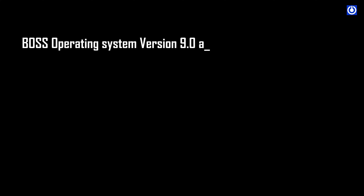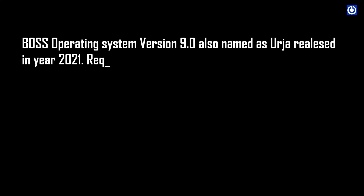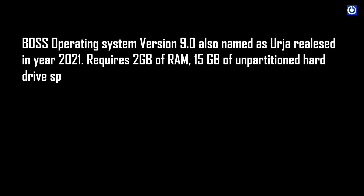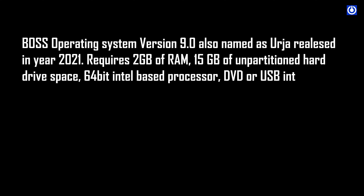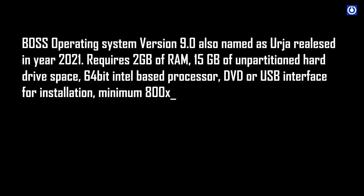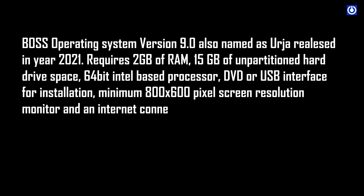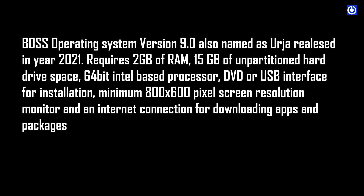BOSS Operating System version 9.0, also named Urja, was released in 2021. It requires 2GB of RAM, 15GB of unpartitioned hard drive space, a 64-bit Intel-based processor, DVD or USB interface for installation, a minimum 800x600 pixel screen resolution monitor, and an internet connection for downloading apps and packages from the repository.